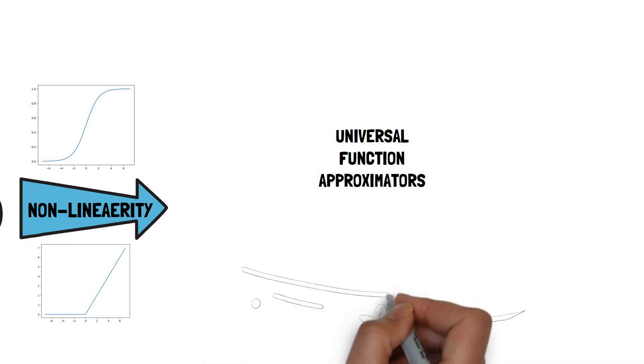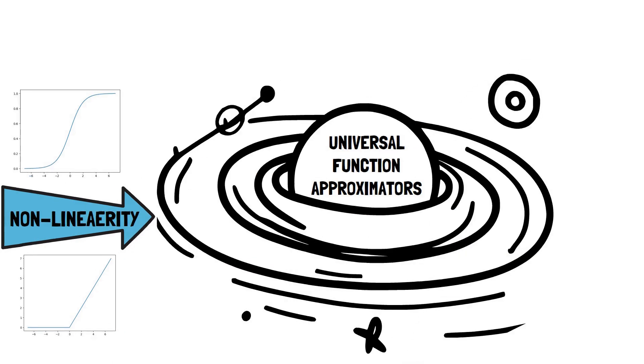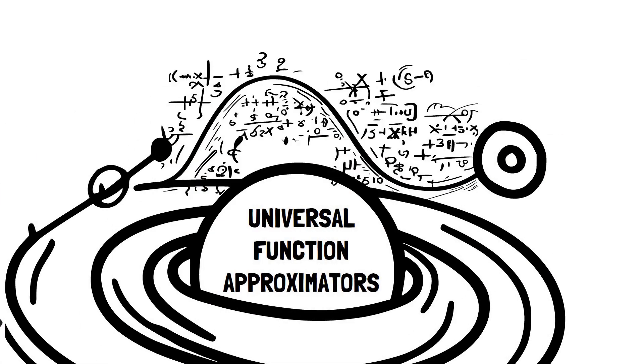In simpler terms, this means that theoretically you can create a neural network that can mimic any function you'd like, as long as that function is continuous and you have enough resources.